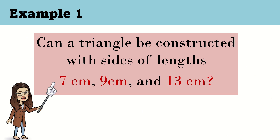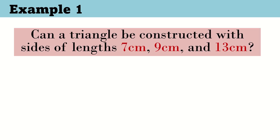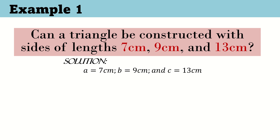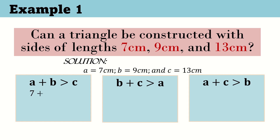Let's have our first example. Can a triangle be constructed with sides of lengths 7 cm, 9 cm, and 13 cm? Let's apply the triangle inequality theorem. Let side A equal 7 cm, side B equal 9 cm, and side C equal 13 cm. First, let's add the 1st and 2nd sides: 7 plus 9 is 16 cm. Is 16 cm greater than the 3rd side, 13 cm? Yes — 16 cm is greater than 13 cm, so it satisfies the inequality.